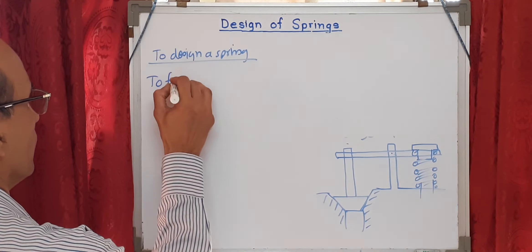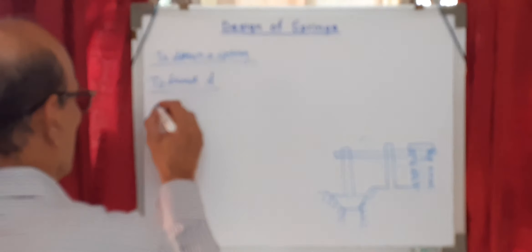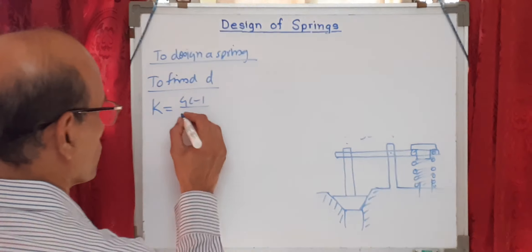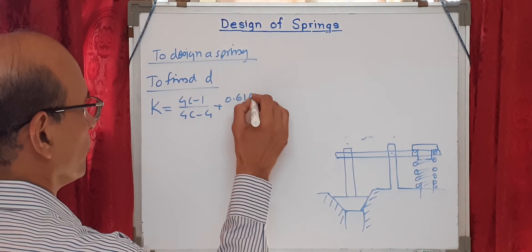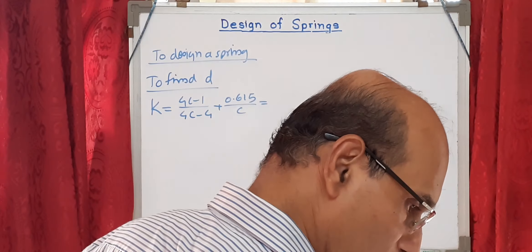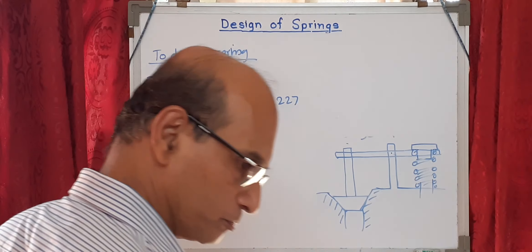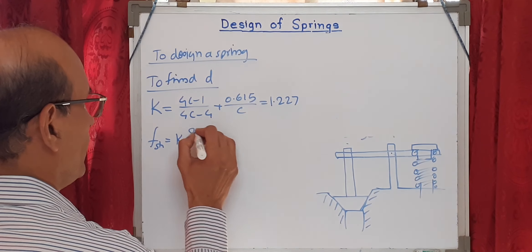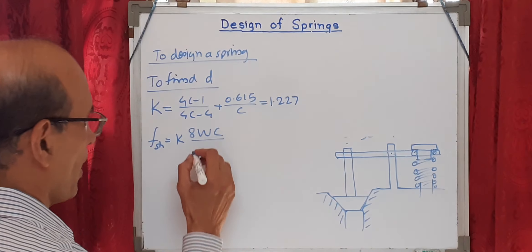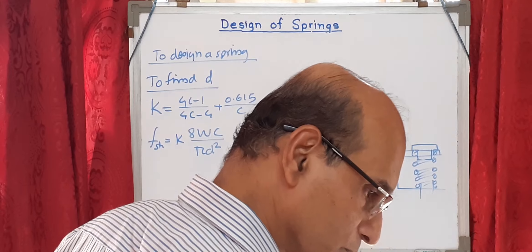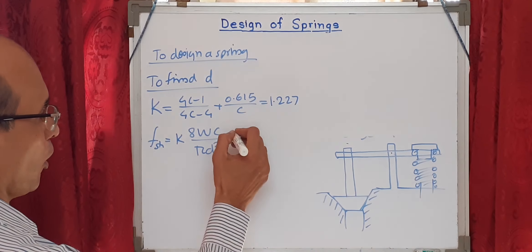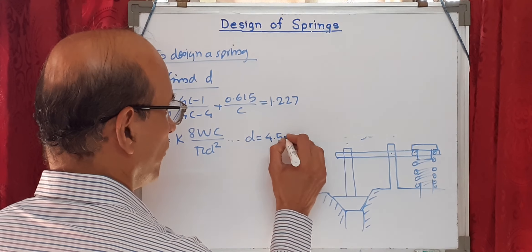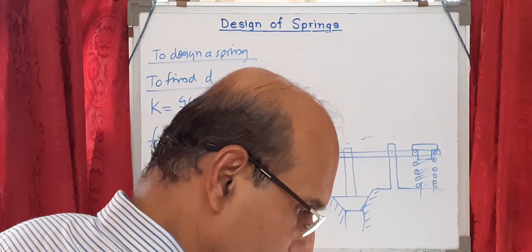First, find the wire diameter d. The Wahl stress factor K_w equals (4C−1)/(4C−4) plus 0.615/C, which comes out to 1.227 in this example. Using the stress equation tau equals K times 8·W·C upon pi·d², and substituting all given values, we get d as approximately 4.5 mm.